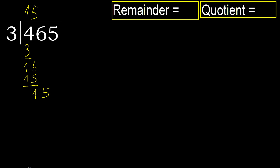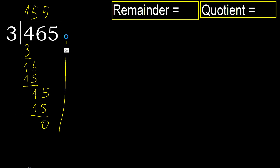15. 3 multiplied by 5 is 15 — 15 is not greater. 15 minus 15 is 0. Next. That is not a number, therefore finish it.